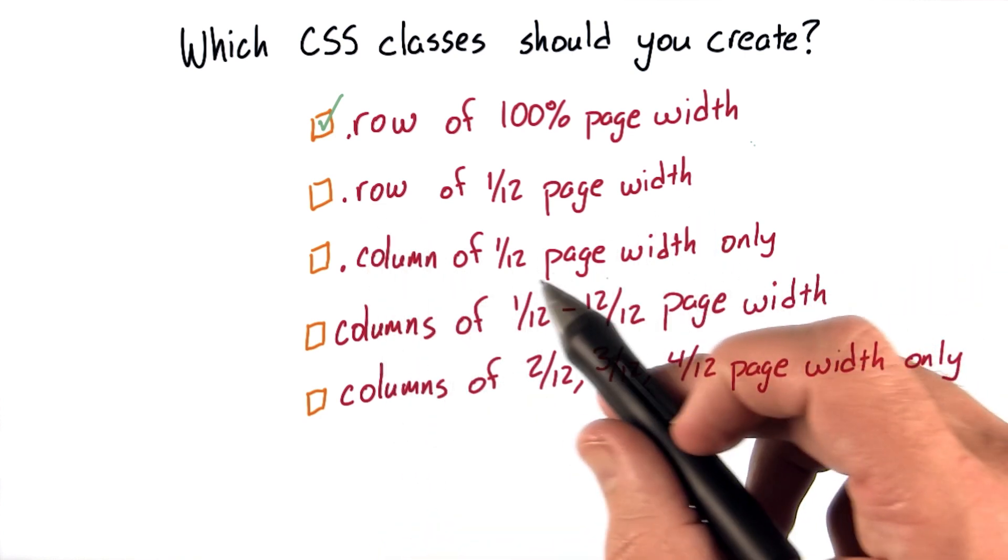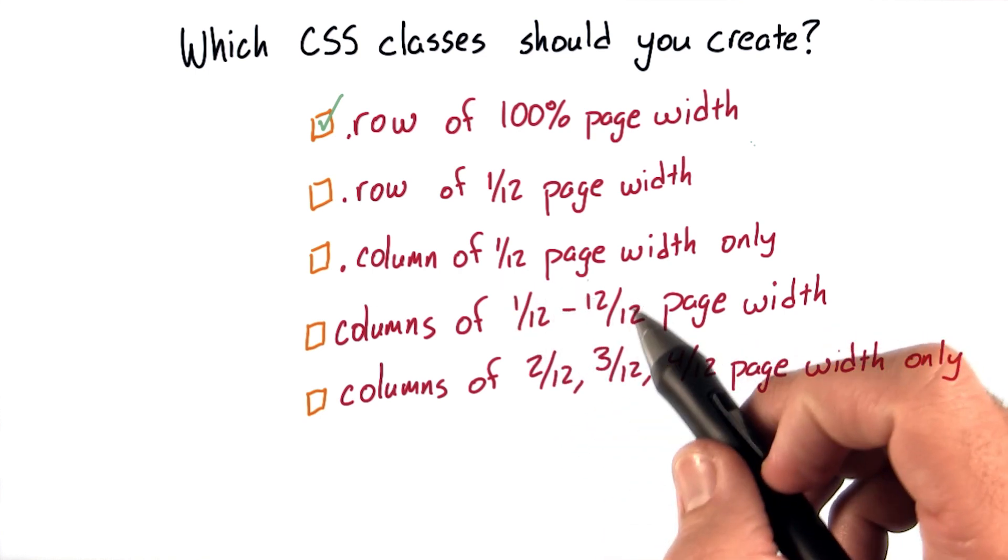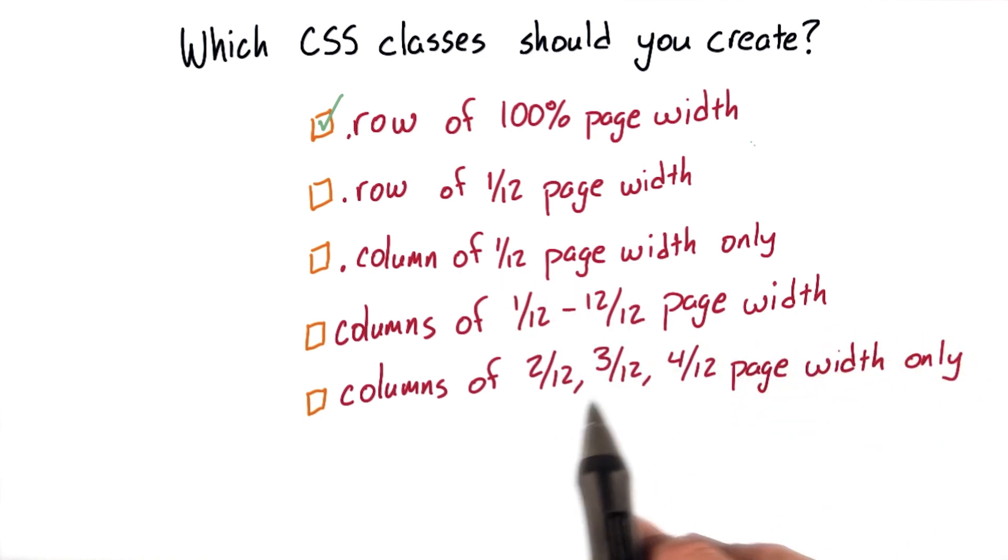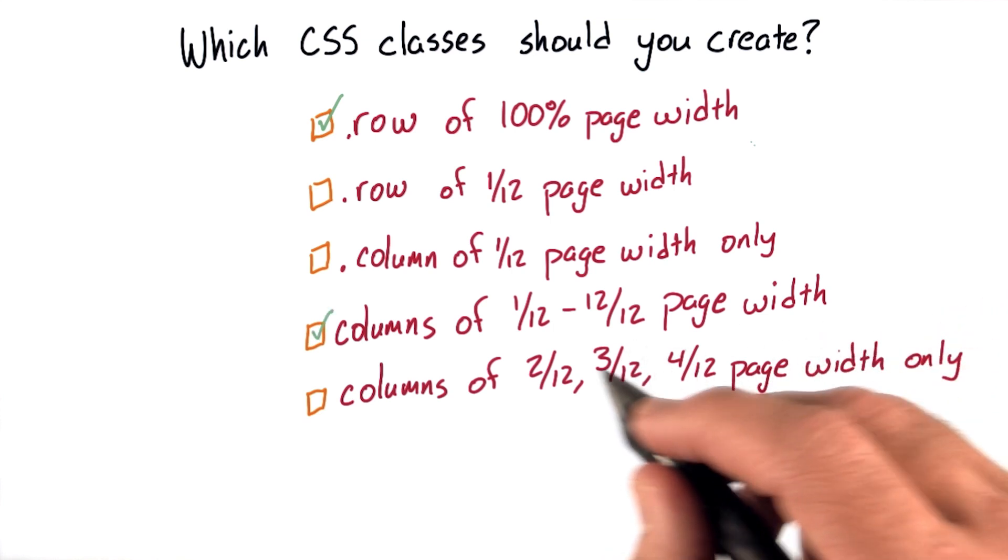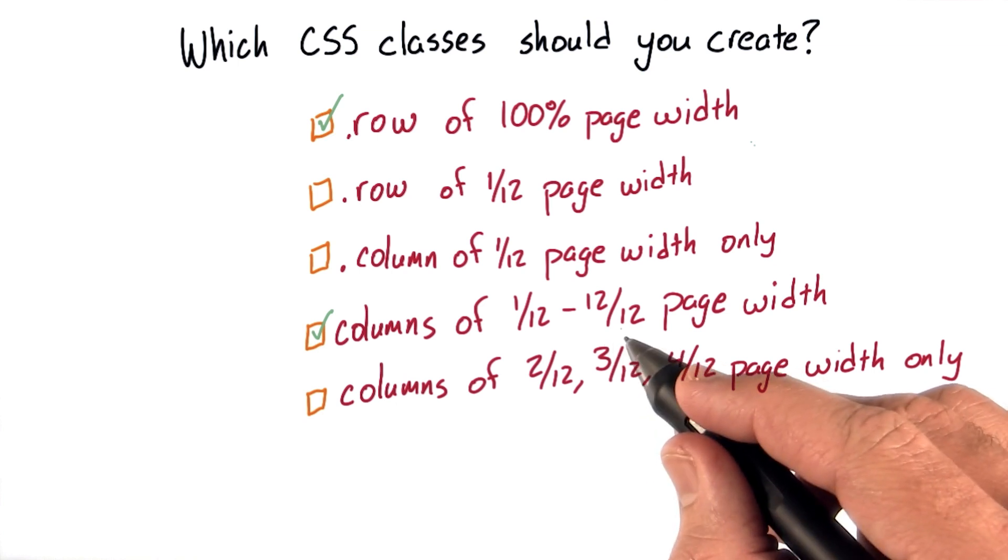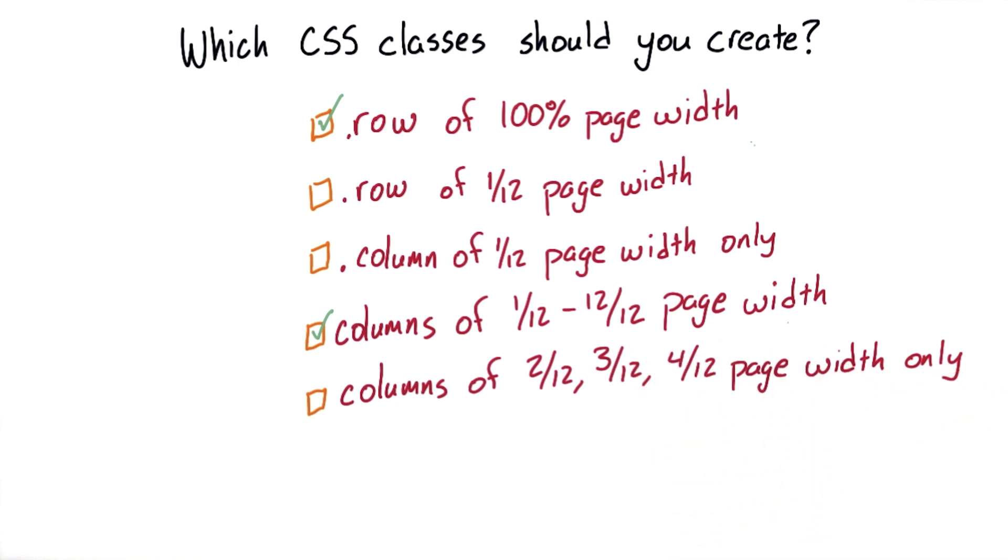Are we only going to need a column of 1/12th of the page width? No. In fact, we're going to need columns of everything between 1/12th and 12 over 12 page widths. By defining columns for any size between 1 over 12 and 12 over 12 page widths, we'll be able to create content in columns that takes up as much or as little of the grid as we'd like.